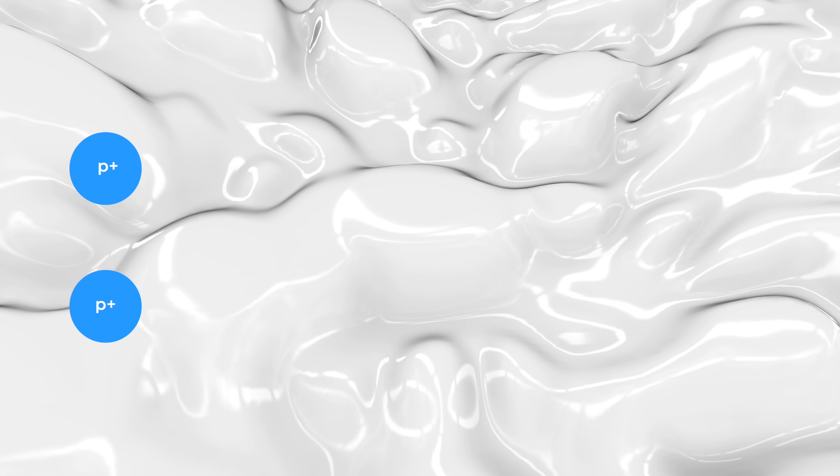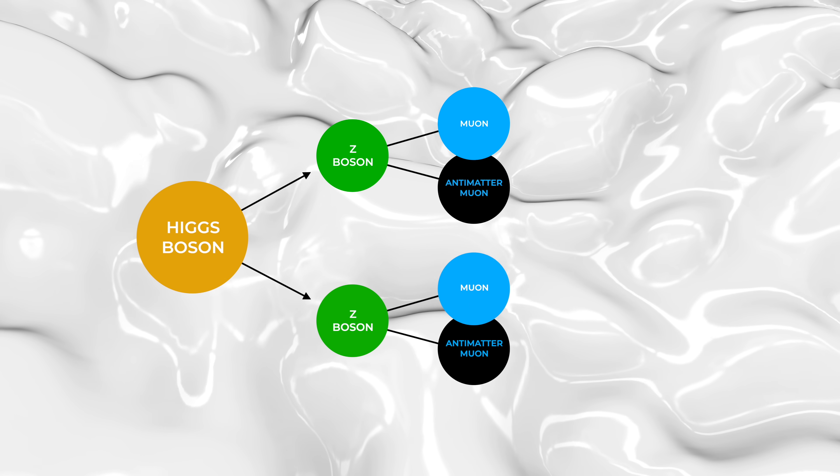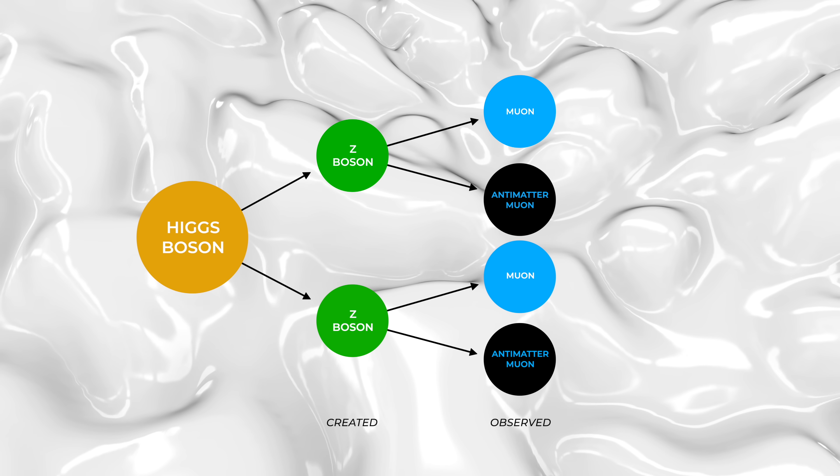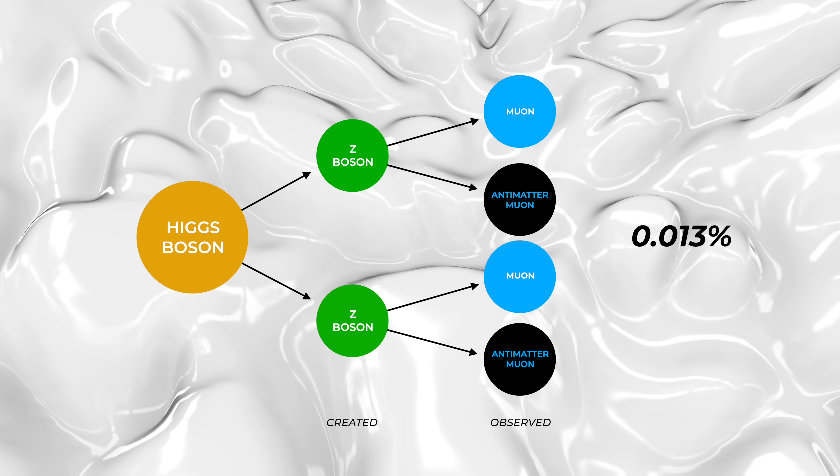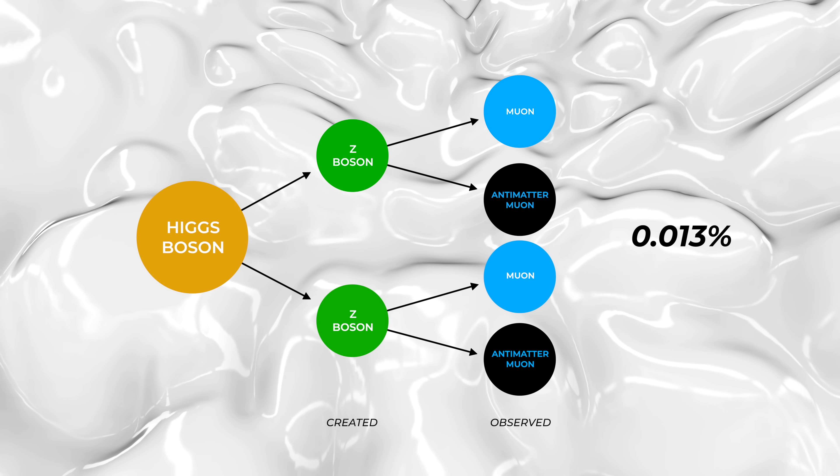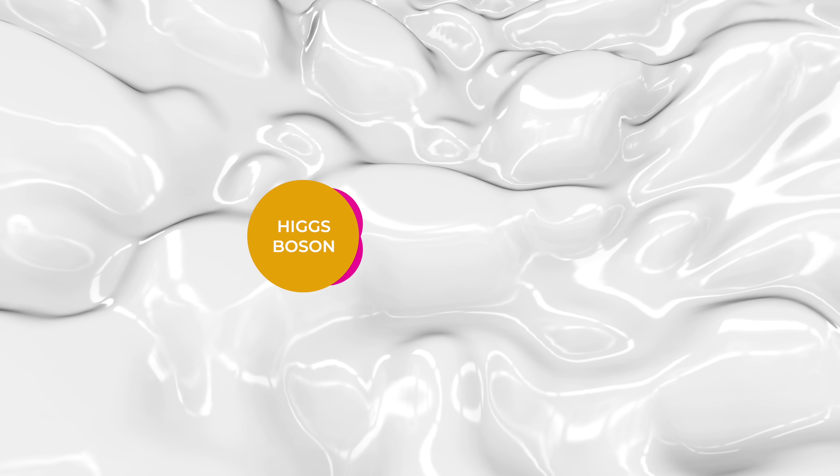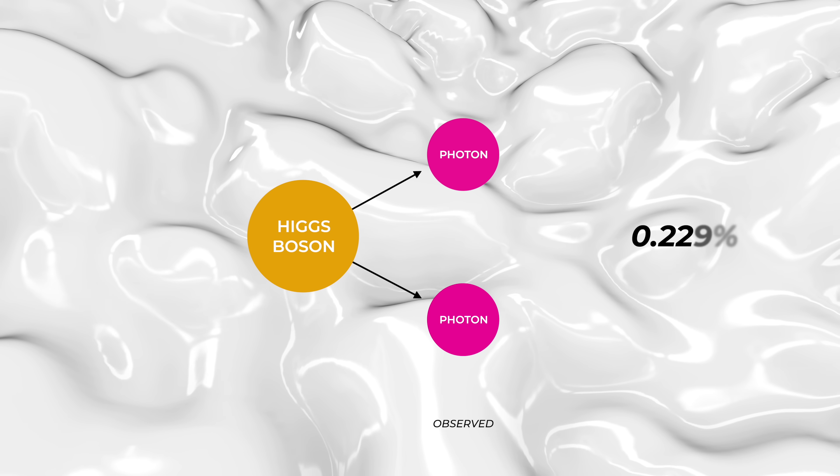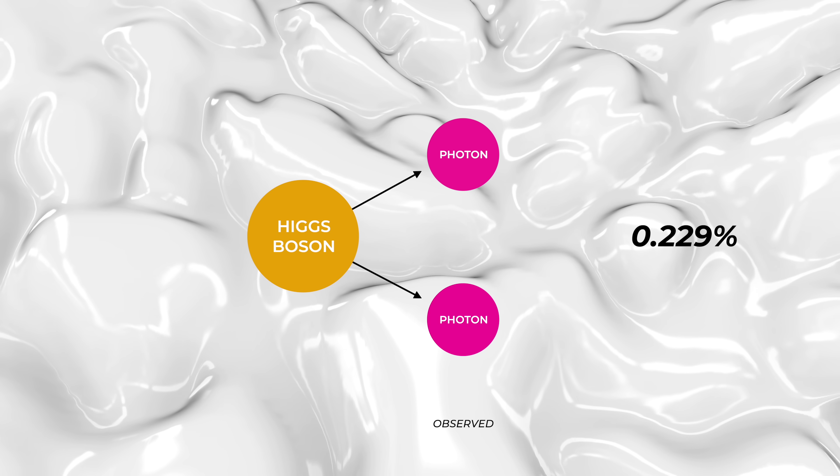For example, one super clean example is an event in which a Higgs boson decays into two Z bosons, and those Z bosons decay either into electrons or muons. This configuration is very rare, occurring only 0.013% of the time. That's super rare, but it also doesn't happen very often by more common physics. Furthermore, it's easy to measure accurately. Then there's the situation in which the Higgs boson decays into two photons. That's also very rare, occurring only 0.229% of the time. But again, this doesn't happen very often in more ordinary collisions.